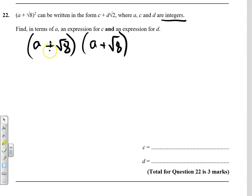So let's multiply now. That gives us A squared plus A root 8 plus A root 8 plus, well that's going to give us root 64 which is actually 8.